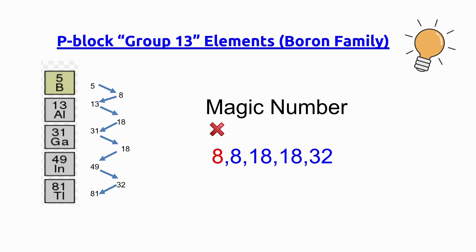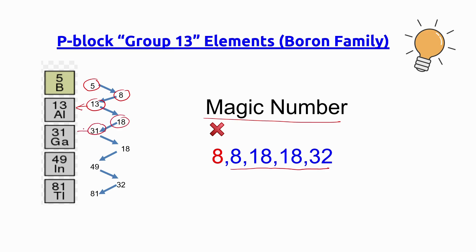Now let's practice writing the group 13 atomic numbers with the help of the magic number concept. For group 13 to 17, we will take magic numbers as 8, 18, 18, and 32. The atomic number for boron is 5. 5 plus 8 gives 13, which is the atomic number for aluminium. 13 plus 18 gives 31, the atomic number for gallium. 31 plus 18 gives 49, the atomic number for indium. 49 plus 32 gives 81.